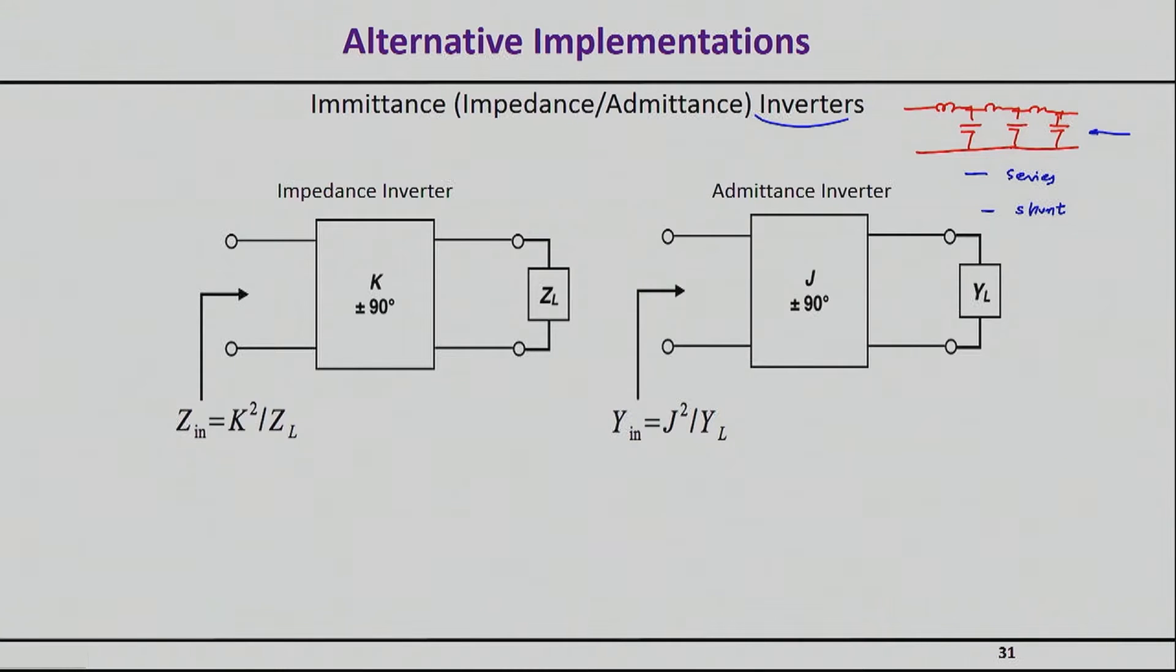So in other words, if you take a load, and you put an inverter in front of it, you will end up with an impedance that's simply K squared divided by ZL, times some value K, that depends on the realization of the inverter. And the inverter will also have a phase shift, plus or minus 90 degrees.